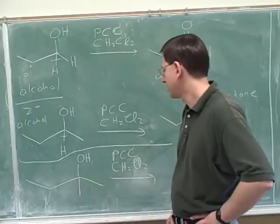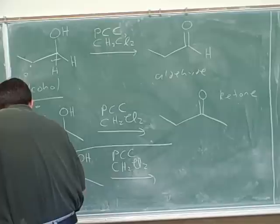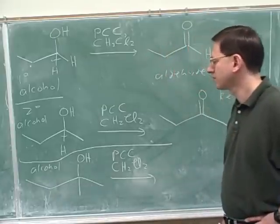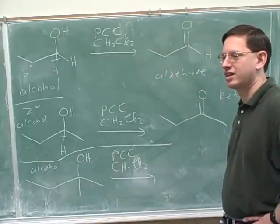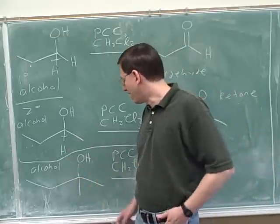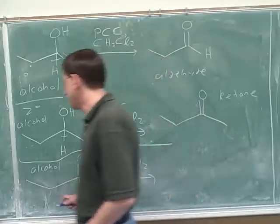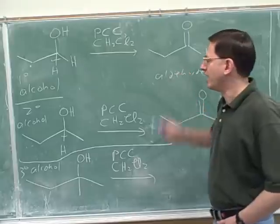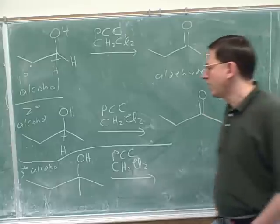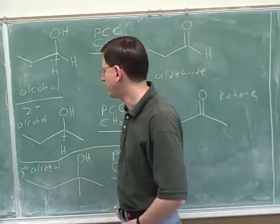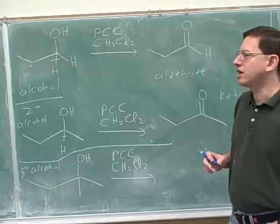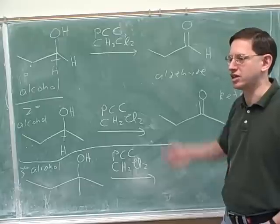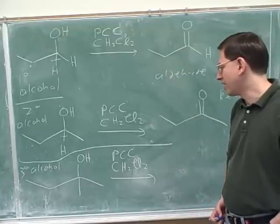Now what type of functional group is this? An alcohol. But how is it different from the previous alcohols? It's a tertiary alcohol. It doesn't have any hydrogens because it's tertiary. So: a primary alcohol oxidizes to an aldehyde, a secondary alcohol oxidizes to a ketone, and a tertiary alcohol doesn't oxidize at all because it has no carbon-hydrogen bonds. There were a lot of problems on the sample exam where the answer was no reaction, so you definitely need to know when there's going to be no reaction.